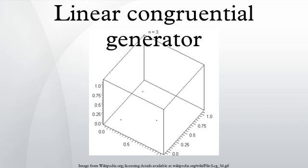If c equals zero, the generator is often called a multiplicative congruential generator, or Lehmer RNG. If c is not equal to zero, the method is called a mixed congruential generator.